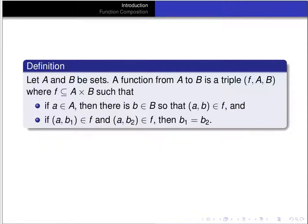With the properties that for every a in the set A, there's a b in the set B so that the pair (a, b) is an element of f, and if (a, b₁) is an element of f and (a, b₂) is an element of f, then b₁ is equal to b₂.